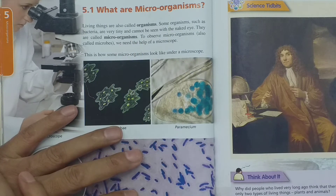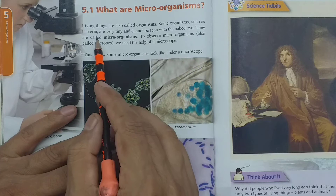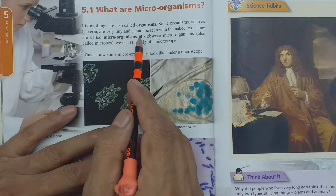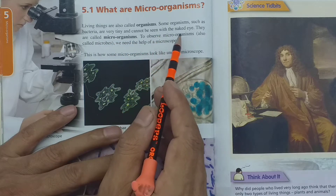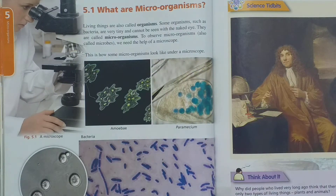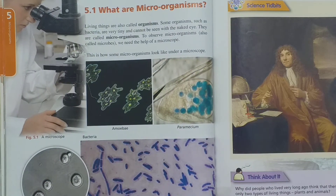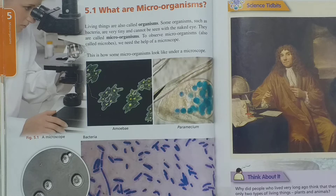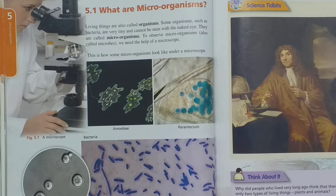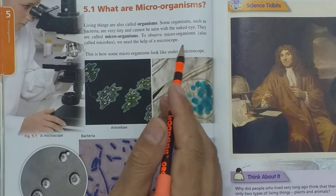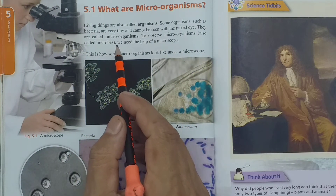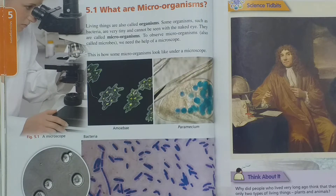We call some organisms, such as bacteria, very tiny — they cannot be seen with the naked eye. Some organisms are so small that you can't see them. They are called microorganisms, which you cannot see without a microscope.